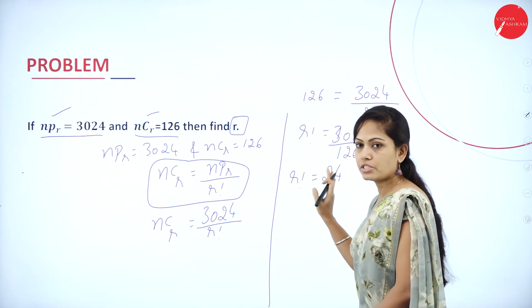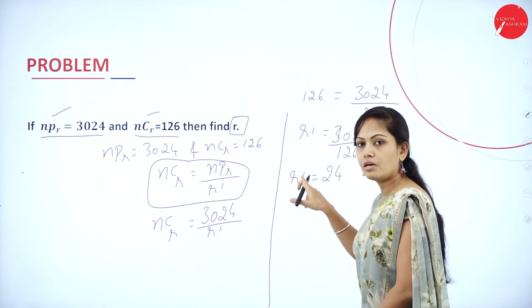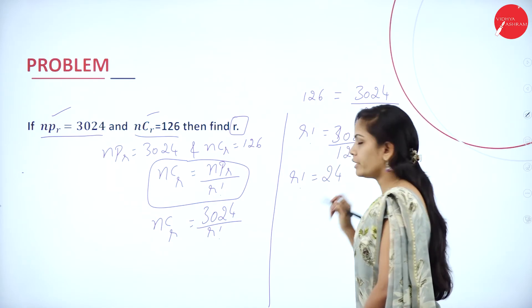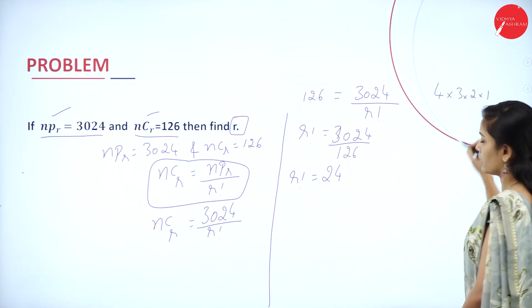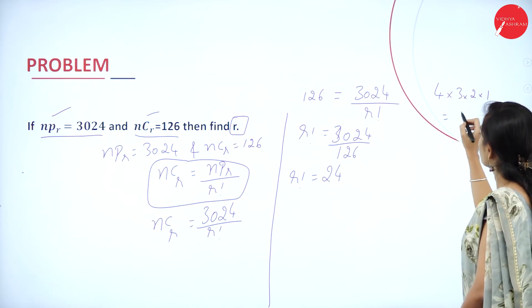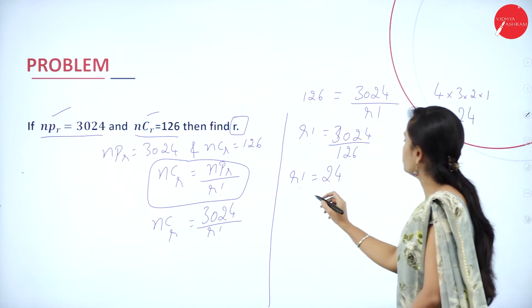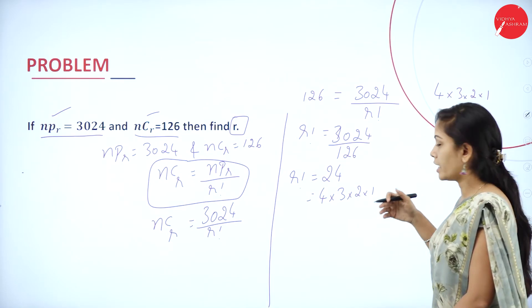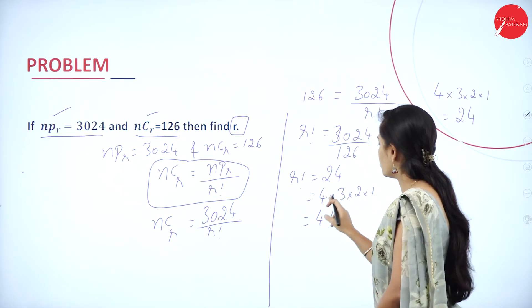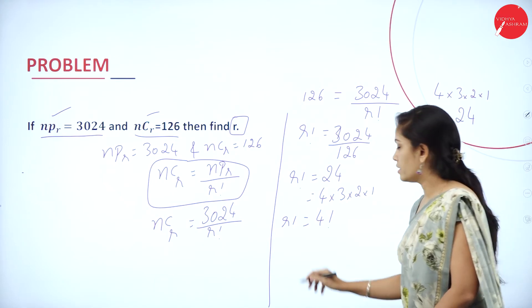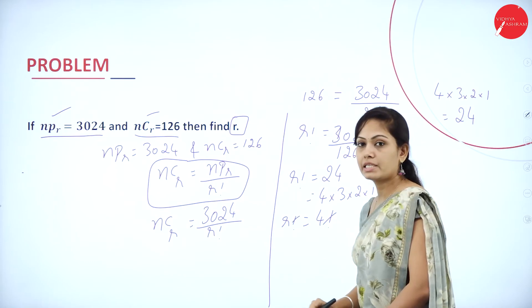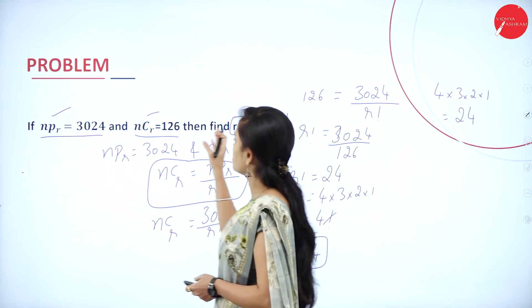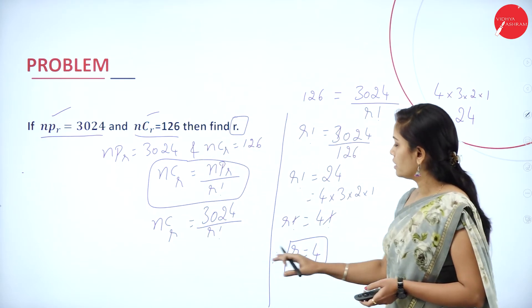Since R factorial equals 4 factorial, the factorials cancel and R = 4. Therefore, the value of R is 4.